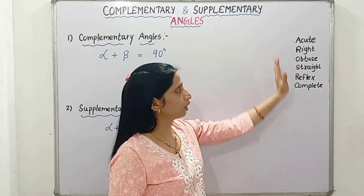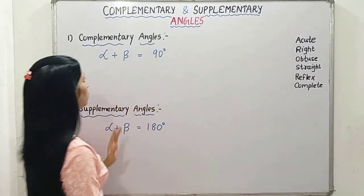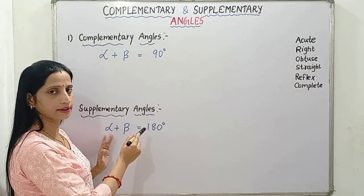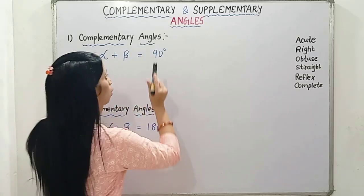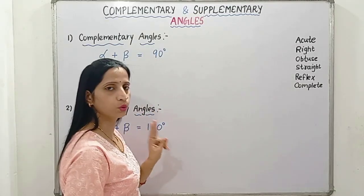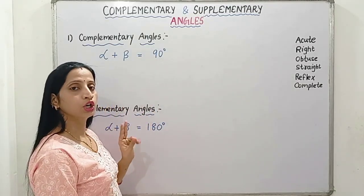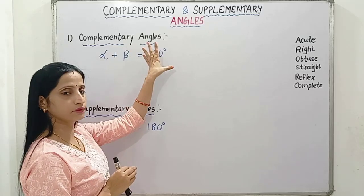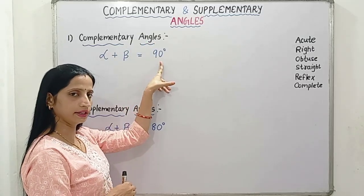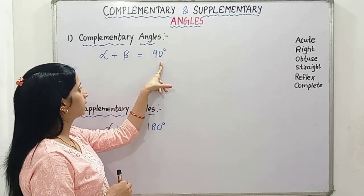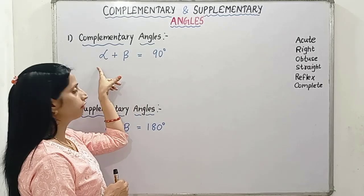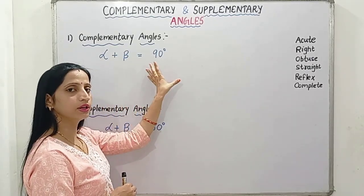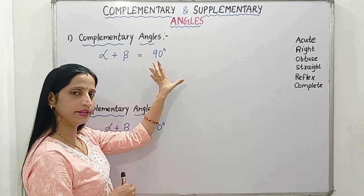Now after this, today we will learn about what are complementary angles and what are supplementary angles. It is very easy. Complementary angles means there will be two angles. Two angles are said to be complementary angles when their sum is 90 degrees. For example, let's take alpha and beta — so if we will add these two angles, their sum will always come to 90 degrees.